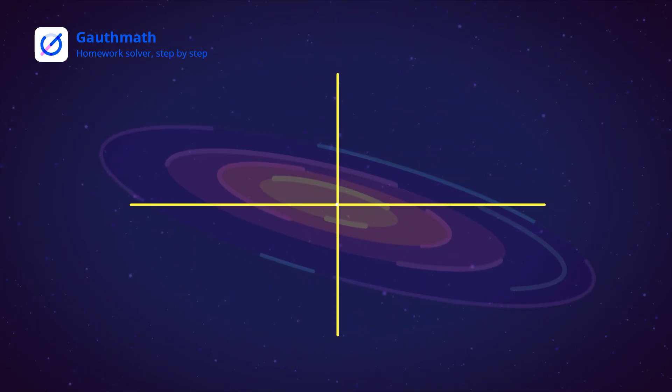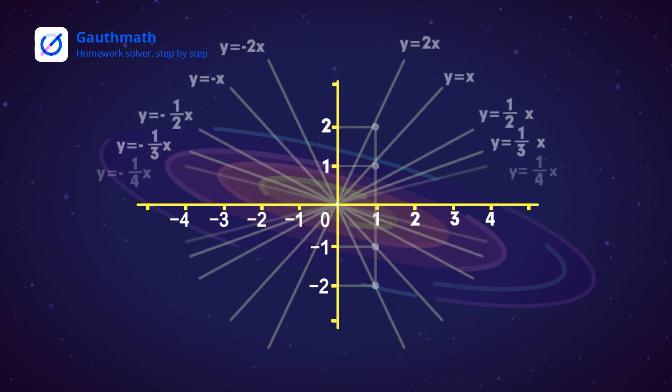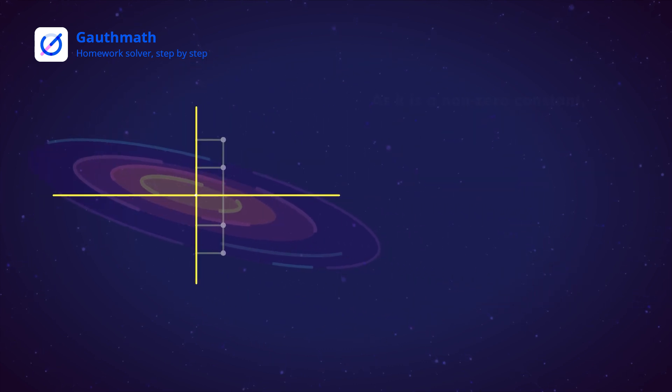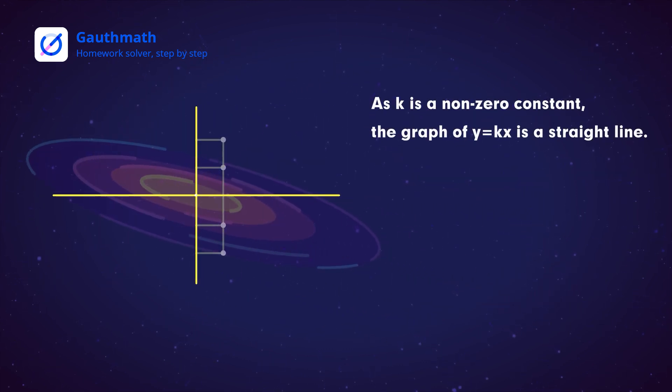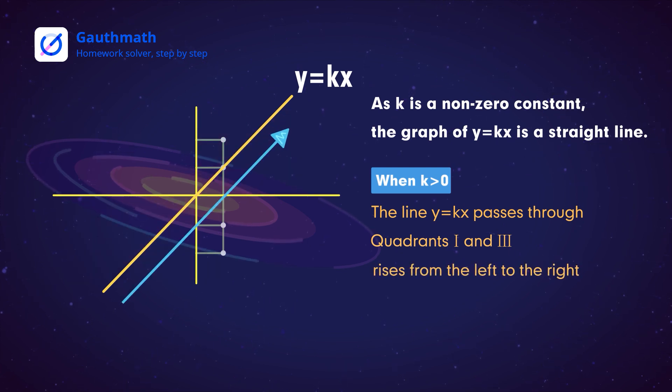Let's take a look at the graphs of proportional functions. We can directly find out the effect of K on the function. As K is a non-zero constant, the graph of Y equals KX is a straight line. When K is positive, it passes through the first and third quadrants and rises from left to right, meaning Y increases as X increases.